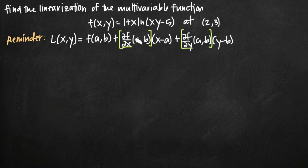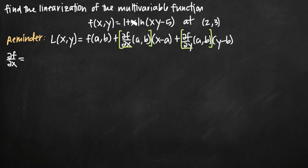Let's start with the trickiest ones. We'll first find the partial derivative of f with respect to x, then with respect to y. With respect to x, the derivative of 1 is just 0. In order to take the derivative of x times the natural log of this quantity, we'll have to use product rule. We'll first take the derivative of x, which is 1, and multiply that by the other function — natural log of (xy - 5) — without doing anything to that one.